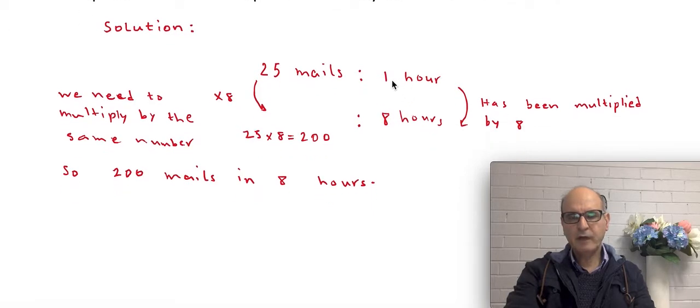Then I ask myself, how can I get from 1 to 8? Obviously, I need to times by 8. To times 1 by 8 to make it 8. But if you times this one by 8, you've got to times this side also by 8. So that becomes 25 times 8, which becomes 200. So the postman will deliver 200 mails in 8 hours.